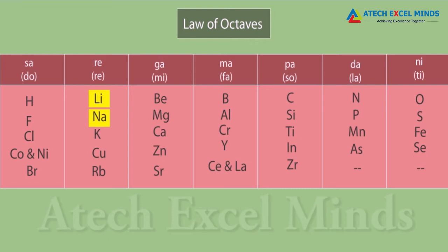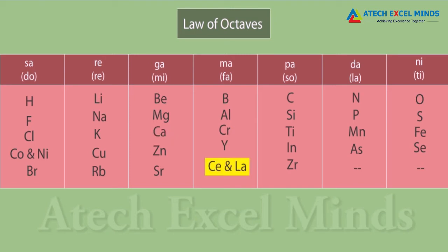There were drawbacks with the octave series. It was applicable only up to calcium, and when new elements were discovered, their properties did not fit the Law of Octaves. In order to fit elements into the table, Newlands adjusted two elements into the same slot and placed some unlike elements under the same note. For example, cobalt and nickel are in the same slot, placed in the same column as fluorine, while iron — which resembles cobalt and nickel — was placed far away from them. Thus, Newlands' Law of Octaves worked well with lighter elements only.